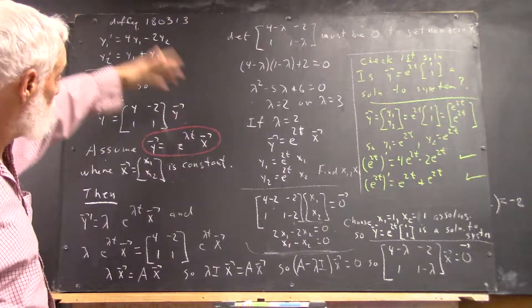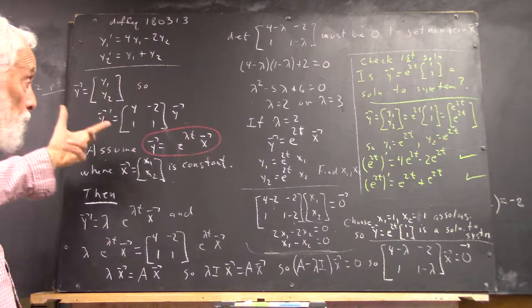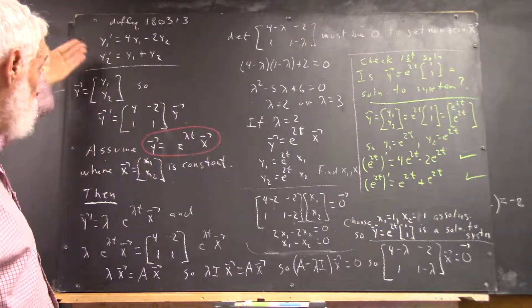It doesn't matter if it's a system of two equations, three equations, ten equations. Of course, if it's three equations, x is going to have three components. And you're going to have a y1, y2, y3, obviously.